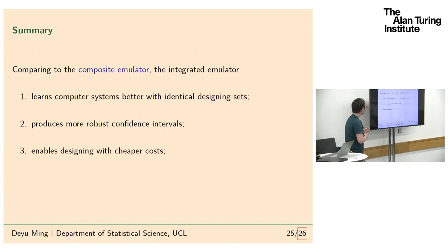So, summary: Compared to the composite, the integrated learns the computer system better with the same amount of information because it knows the structures of the system and how the information flows in it. It also produces more robust confidence intervals because for the same reason we gain more information and benefit from that. Finally, it enables designing with cheaper cost because you basically construct an emulator for each physical model, which provides the flexibility for you to retrain each model, and then you can easily integrate them because of the analytical solution. Okay, that's it.